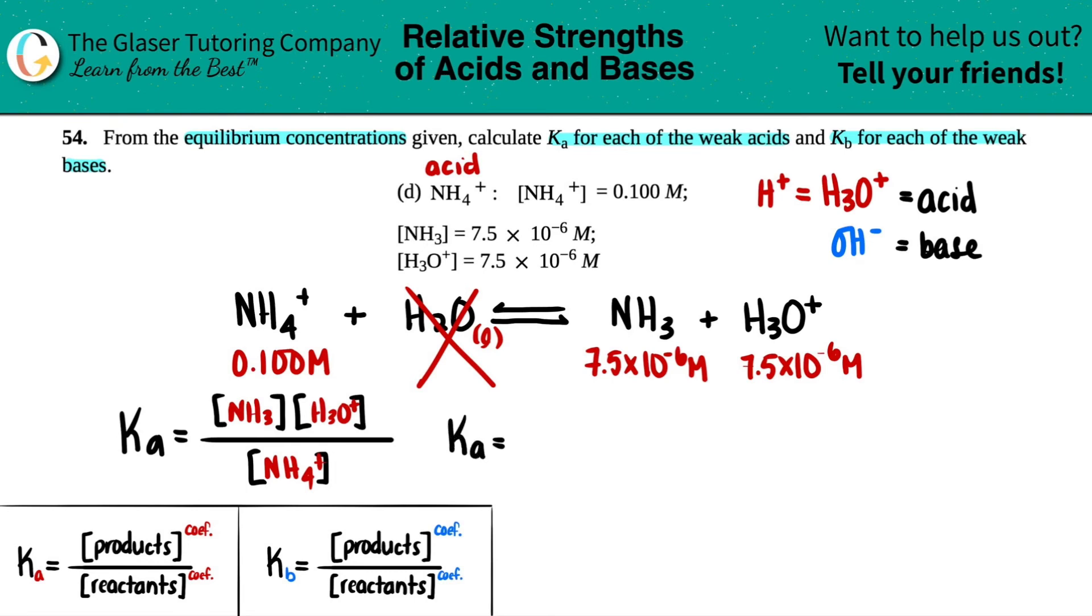Ka equals (7.5×10^-6) times (7.5×10^-6) divided by 0.100. Calculating: 7.5×10^-6 times 7.5×10^-6 divided by 0.1.